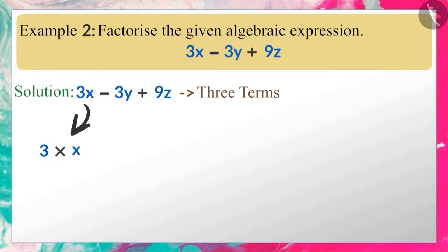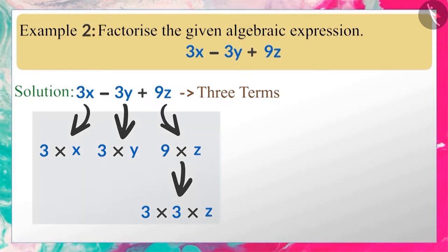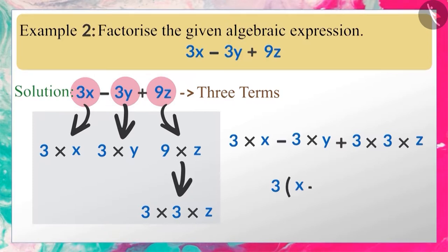This algebraic expression has three terms. Like the previous example, we can write this expression in the same manner. When we factorize the expression 3x minus 3y plus 9z, we get two factors: 3 and x minus y plus 3z.